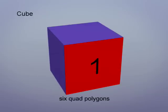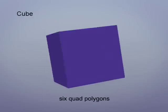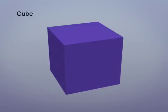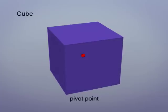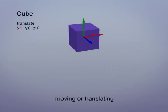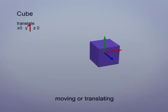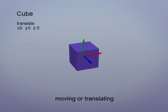Six quad polygons make up this object. It's named Cube. Its pivot point is the place that it's rotated and scaled from. Here we're moving, or translating, the object in 3D space. The computer uses the numbers to position the objects.